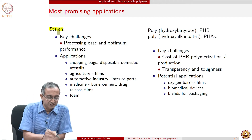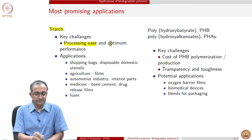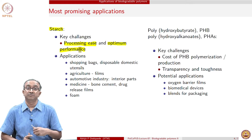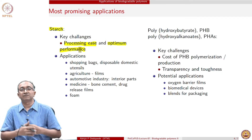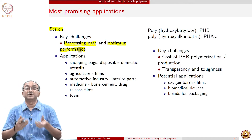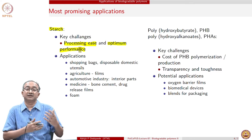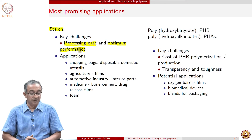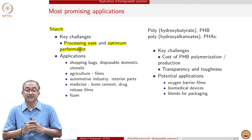Looking at starch-based materials, the key challenge is processing and also optimum performance. Quite often starch film may be brittle, and many film applications require flexible transparent film. Can that be achieved using starch, and can film be made at the same rate as polyethylene or polypropylene packaging films? Many of these questions have been addressed to a limited extent.